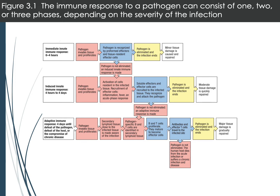If the pathogen is not eliminated, this is where the adaptive response comes in. For a first exposure, the adaptive response generally starts to kick in around day four, with recruitment of T-cells, B-cells, and antibodies specific to the pathogen to help clear it. T-cells and B-cells proliferate in response to their antigen and recruit additional cells. If the pathogen still hasn't been eliminated, it could cause a chronic infection or tissue damage that impairs organ function.